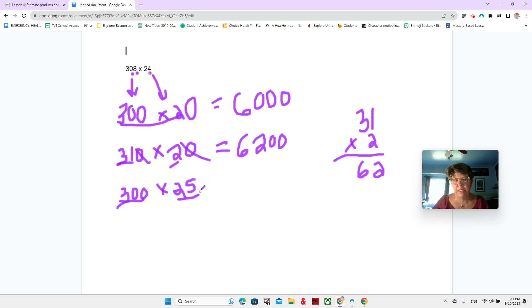Or we could do three times 25. Think about having three quarters. Three quarters is 75 cents. Three times 25. And then our two zeros. So that would be 7,500.